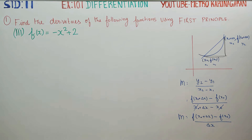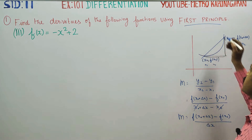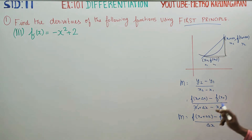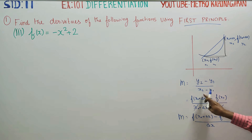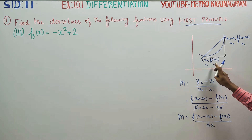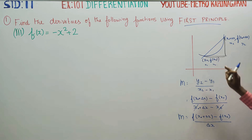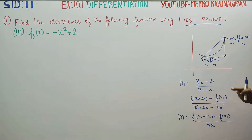Before entering into the first principle, just recall slope from 10th standard: slope = (y2 - y1) / (x2 - x1), with point (x1, y1). In 11th standard, y is equal to f(x).